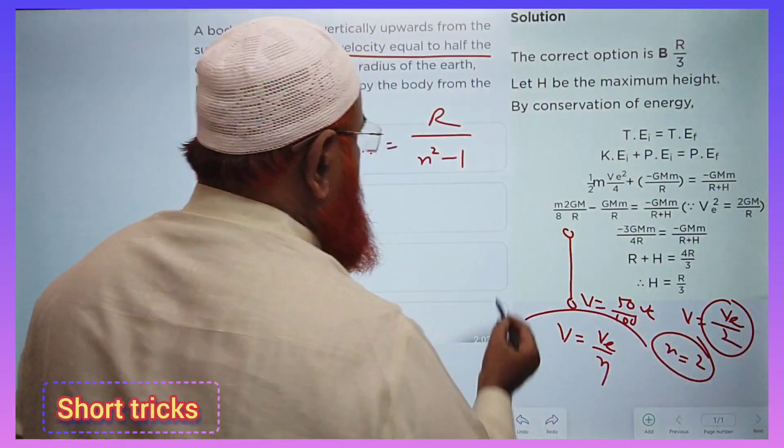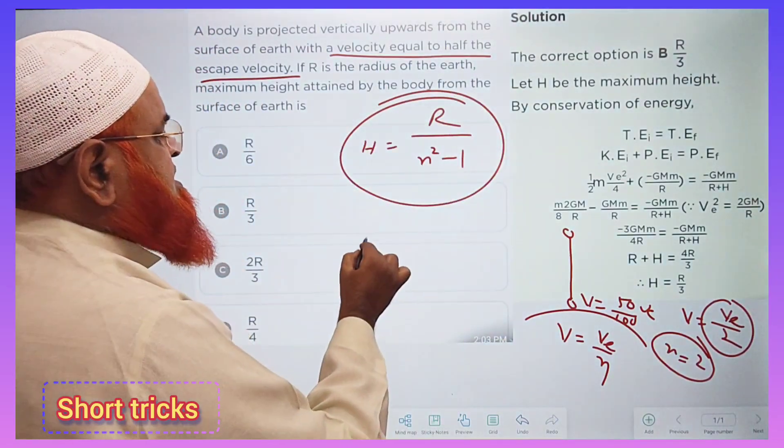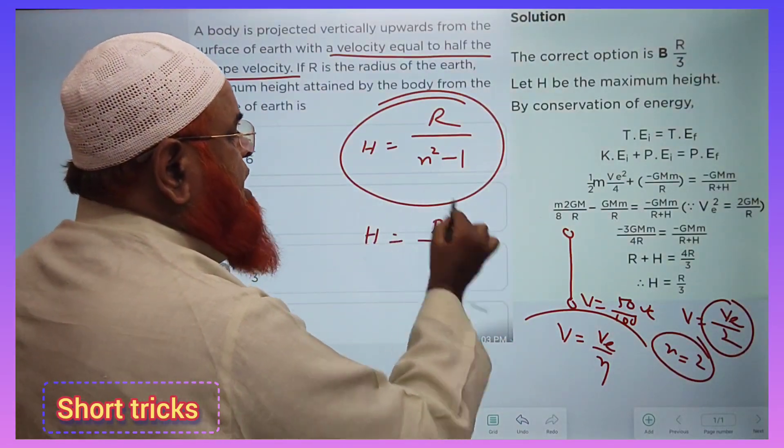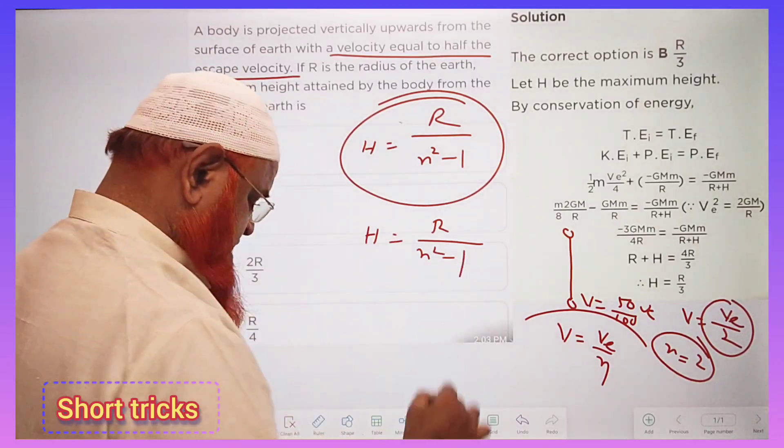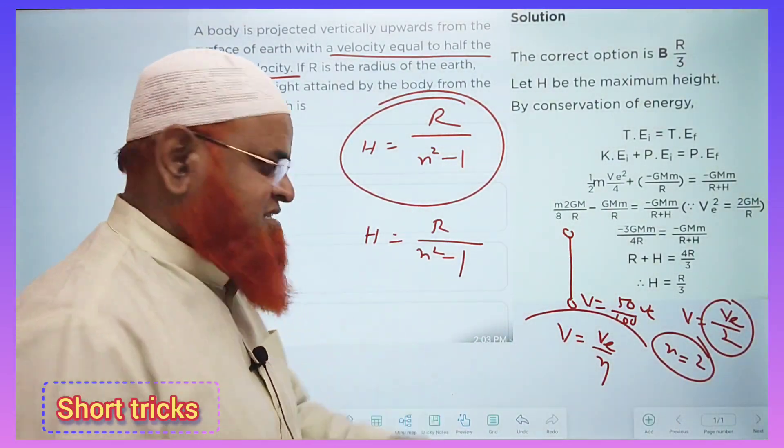According to the problem, n equals 2. Our shortcut formula says that h is equal to r by n square minus 1. And our n value is 2. That's it.